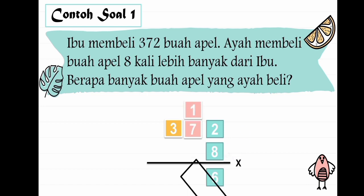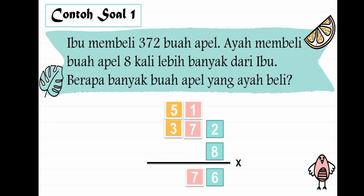Lanjut, 7 dikali 8 hasilnya 56. Jangan lupa ada yang disimpan angka 1 di atas angka 7. Berarti hasilnya 56 ditambah 1 sama dengan 57. Ditaruh angka 7, disimpan angka 5.